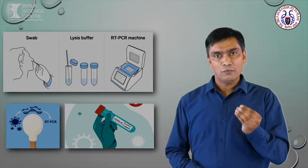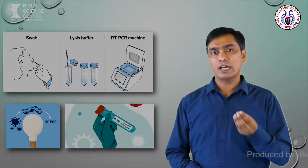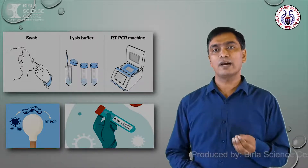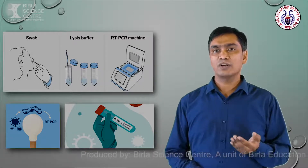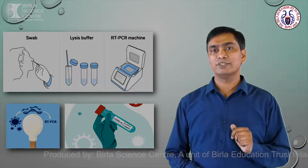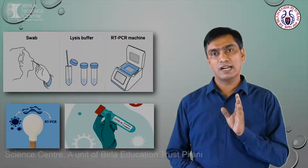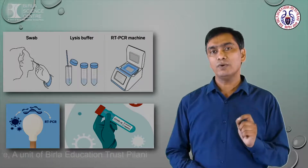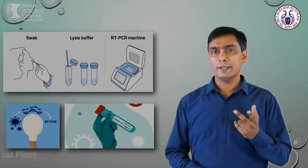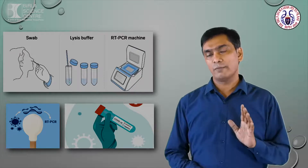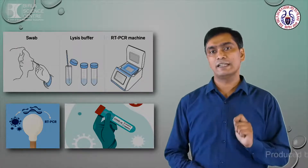The lysis buffer acts on the protein coat of the virus and digests it. From the lysis buffer, we collect the genomic content — with respect to coronavirus, that is RNA. The RNA of coronavirus is then used for RT-PCR preparation. In the RT-PCR mixture, two important enzymes are used: reverse transcriptase, which converts the coronavirus RNA into DNA, and Taq DNA polymerase, which amplifies the DNA using reverse and forward primers. If amplification takes place, the result is positive; if not, the result is negative.